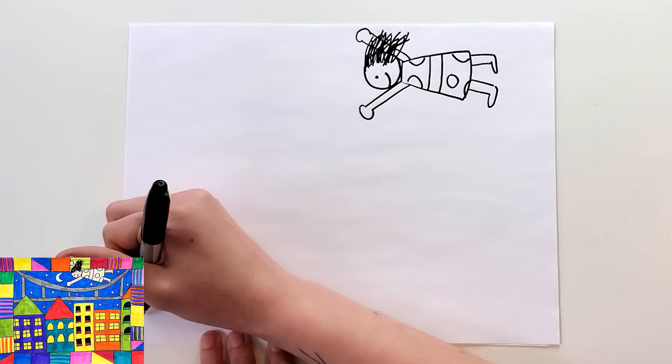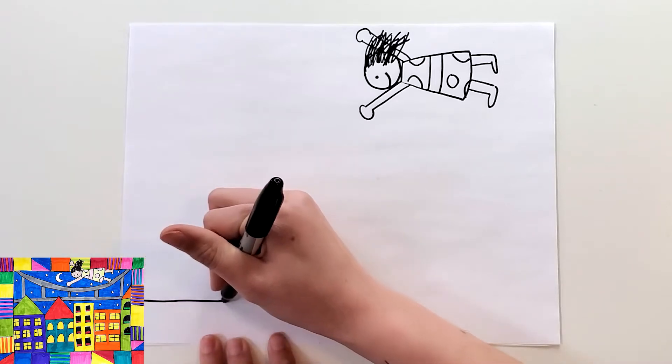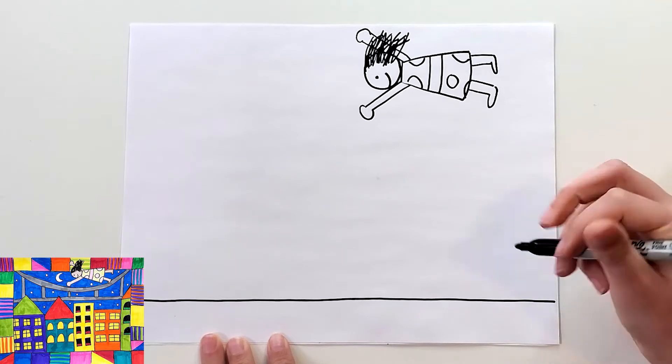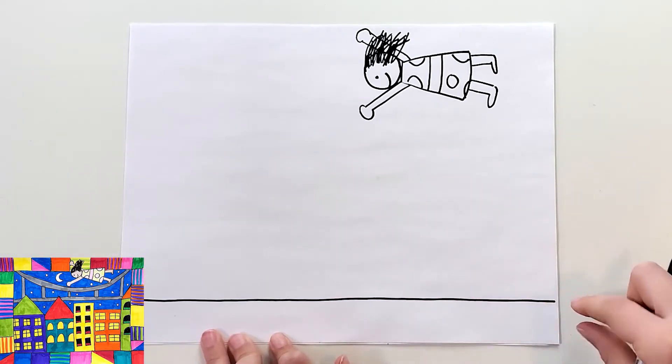I'm going to start about an inch from the bottom here, all the way on the side, and I'm going to very carefully and very slowly draw a line all the way across, trying to make sure that the amount of space between the line and the bottom is about the same all the way.